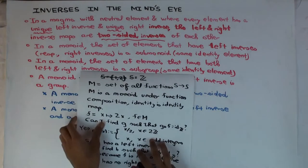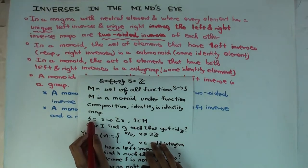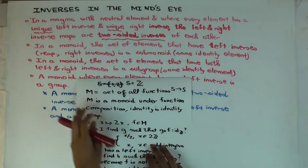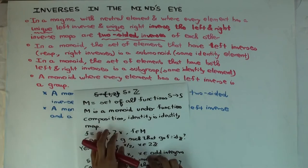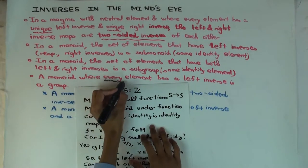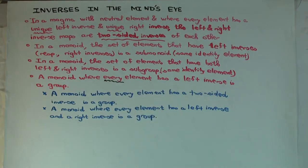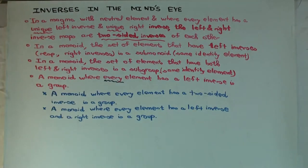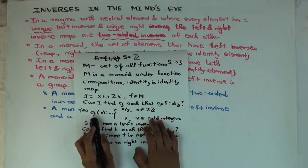Let's go back to our example. We started with function f, which has a left inverse but not a right inverse. However, this problem says a monoid where every element has a left inverse — the key word is every element. So how do you use the fact that not just one element, but every element has a left inverse? Let's ask: does g have a left inverse?